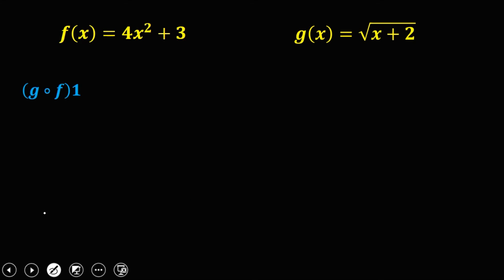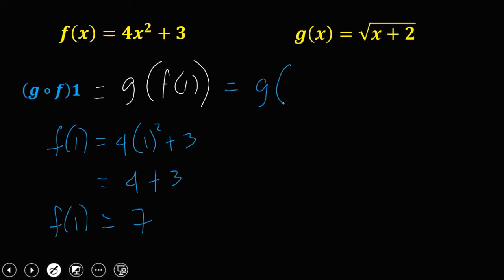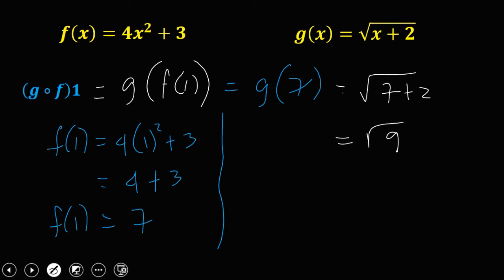For g(f(1)), first solve f(1): 4 times 1 squared plus 3 = 4 + 3 = 7. So f(1) = 7, and the equation becomes g(7). Substituting into g(x): √(7 + 2) = √9 = 3. The answer is positive 3.